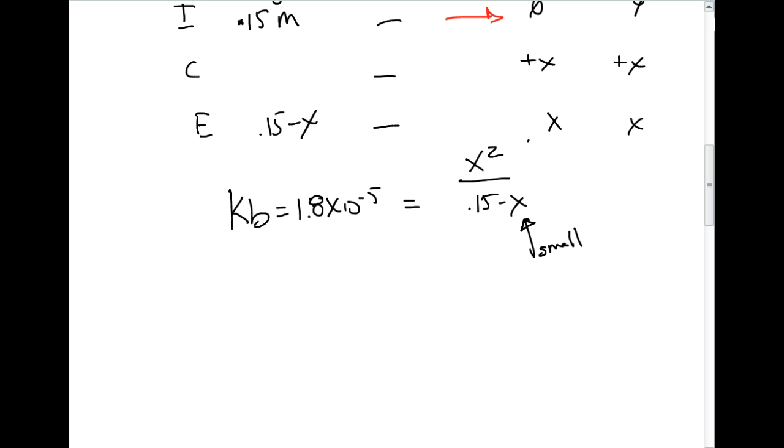We're going to assume it's small, and so we're going to solve for x. We'll take 1.8 times 10 to the negative 5th multiplied by 0.15 equals x squared. We're then going to take the square root of both sides to solve for x. So I'm going to get x equals 1.64 times 10 to the negative 3rd.